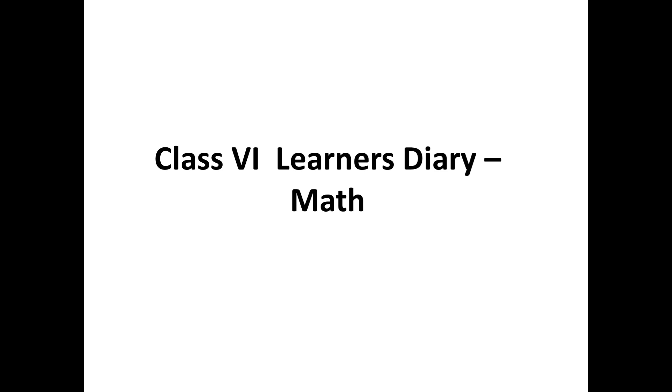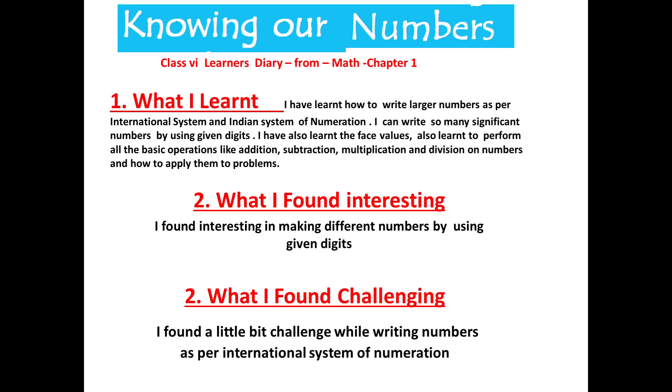So let's start. You can note it down. First chapter is Knowing Our Numbers, where you see there are three main headings for your learner's diary. First is What I Learned, second one is What I Found Interesting, and the third one is What I Found Challenging. From every chapter, you would have to write down on these topics very briefly, not in an elaborate fashion.